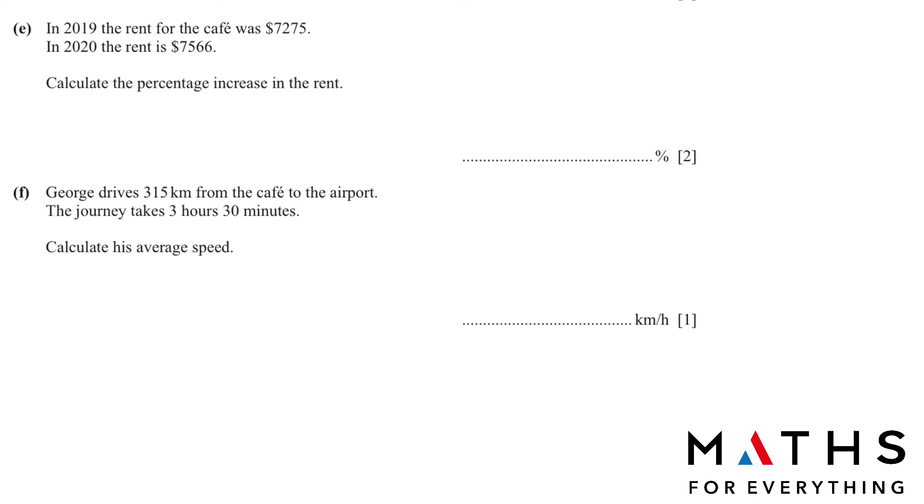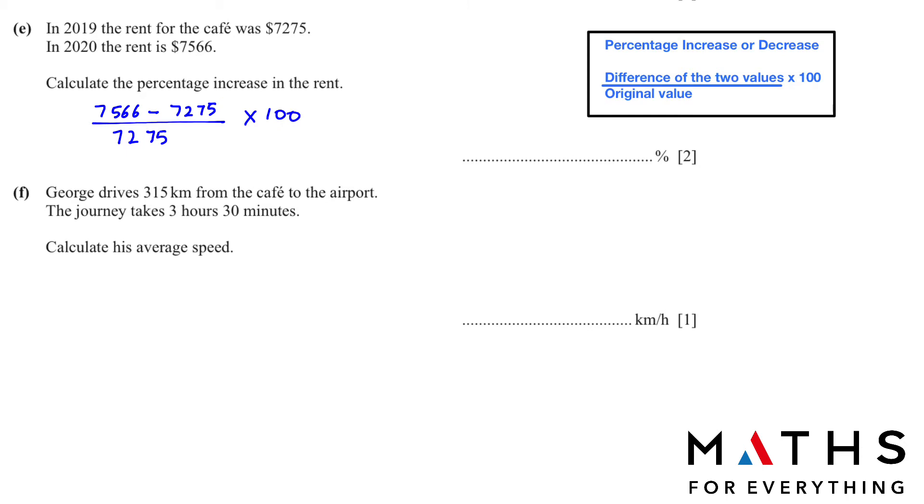Now let's solve one E. In 2019 the rent for the cafe was 7275. In 2020 the rent is 7566. Calculate the percentage increase in the rent. To find the percentage increase or decrease, we use this simple formula: difference of the two values, so the big number minus the small number, divided by the original value. So 7566 minus 7275 divided by the rent which was previous in 2019, 7275, and this answer we multiply by 100. This will give us 4, so the answer is 4 percent.